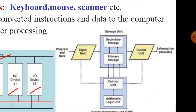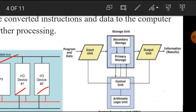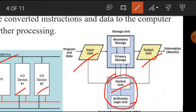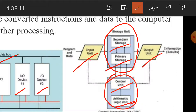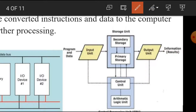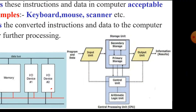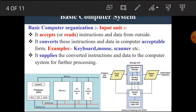In this block diagram also, we can see the same blocks — that means the input unit, output unit, the CPU which consists of control unit and arithmetic and logic unit. This is the storage unit, which has mainly two memories: secondary storage and primary storage. These are connected with each other through wires, and these wires are known as the buses. I hope you understand the basic structure of the block diagram of the basic computer organization.